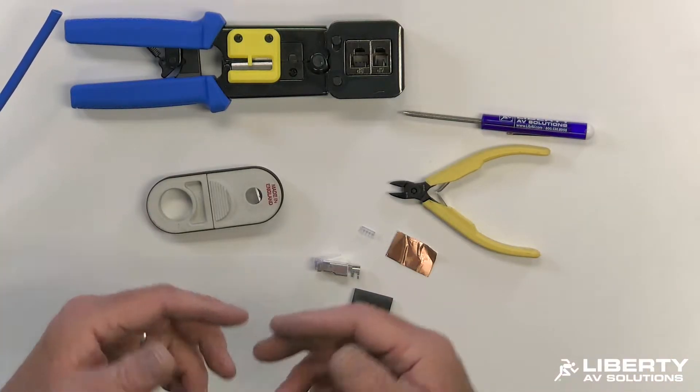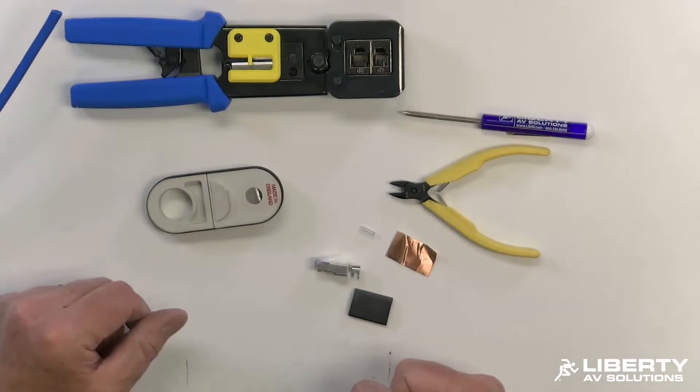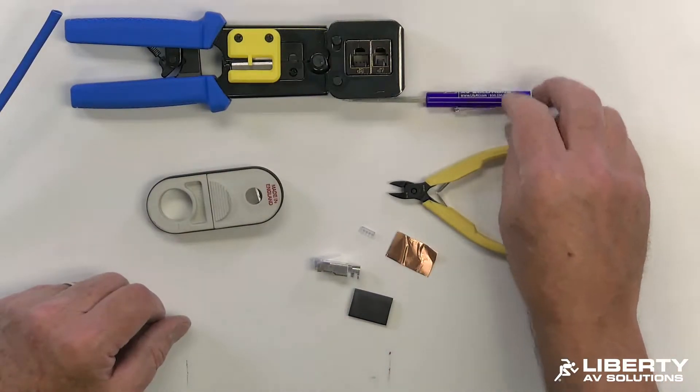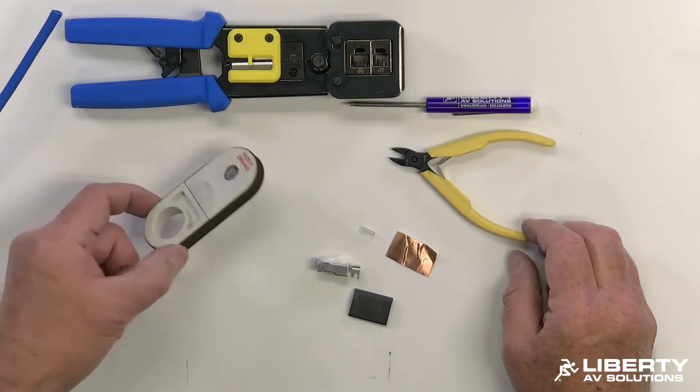So first you want to make sure you've got the right tools. You're going to need a crimp tool for the appropriate connector that you're terminating. You want to probably have a tweaker, a pair of diagonal flush cutters, and a jacket stripper.